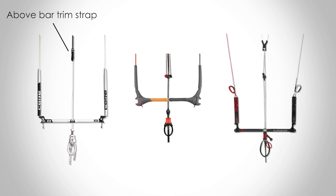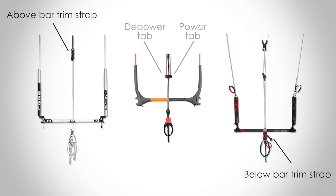On some designs, you may find your depower strap below the bar, or you may even have two separate tabs. But this still works on the same principle — the power tab will extend the centre lines, and the depower tab will shorten the centre lines.